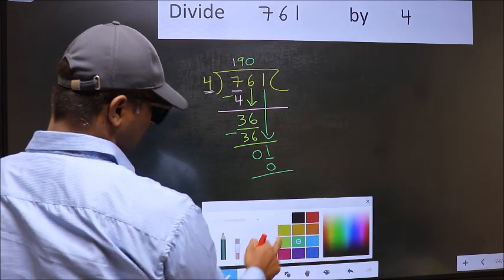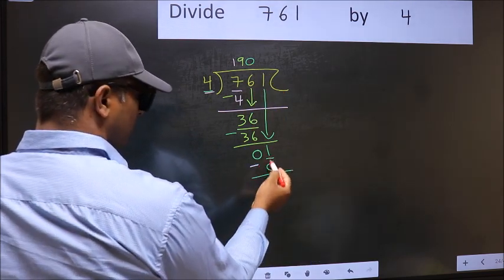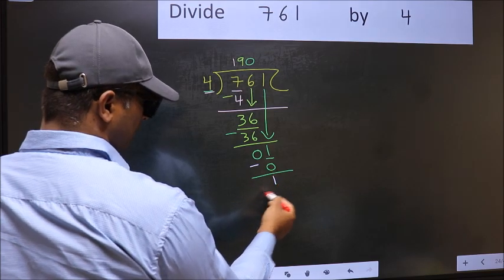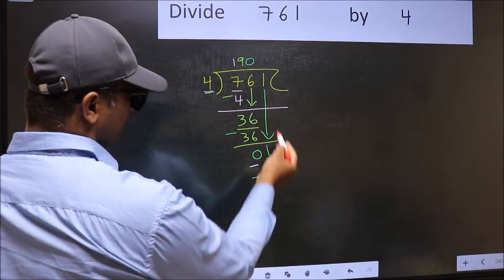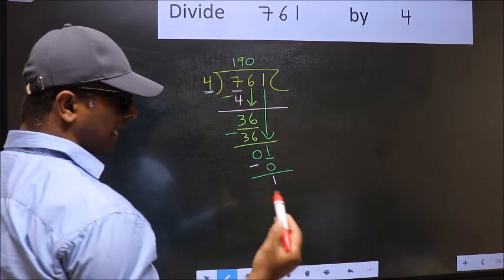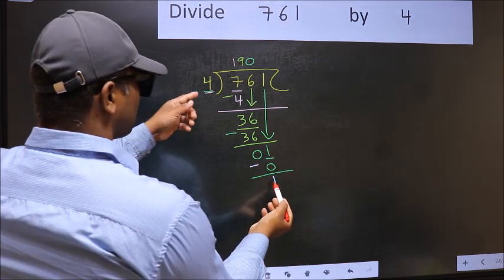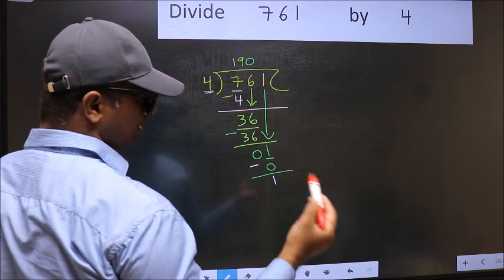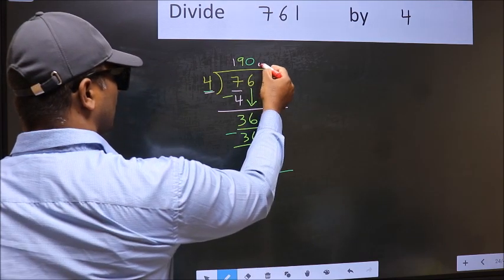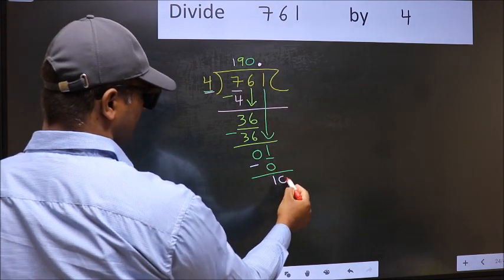Now you should subtract. 1 minus 0, 1. Over here, we did not bring any number down. And 1 is smaller than 4.